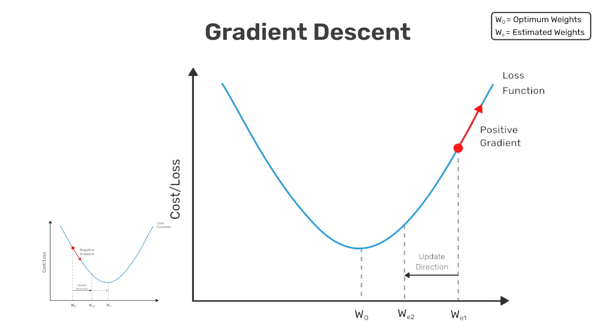But here we see that we'd need to reduce the value of the current weight to get closer to the optimum value of w, and therefore we still need to move in a direction that's opposite from the sign of the gradient.